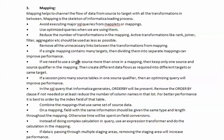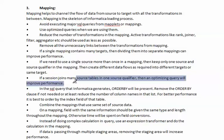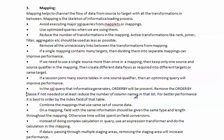If you need to use a single source more than once in the mapping, keep only one source and source qualifier in the mapping, then create different data flows as required into different targets or the same target. If the session joins the main source table in the source qualifier, an optimized query will improve performance and help fetch the data quickly when using many tables. In the SQL query that Informatica generates, an order by clause will be present — remove the order by clause if not needed, or at least reduce the number of column names in that list. It is best to order by the index field on the table.